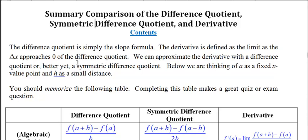So the difference quotient is simply the slope formula. The derivative is defined as the limit as delta x approaches zero of the difference quotient. We can approximate the derivative with either a difference quotient, or better yet, a symmetric difference quotient. Below we're thinking of a as a fixed x-value point, and h is some small distance.